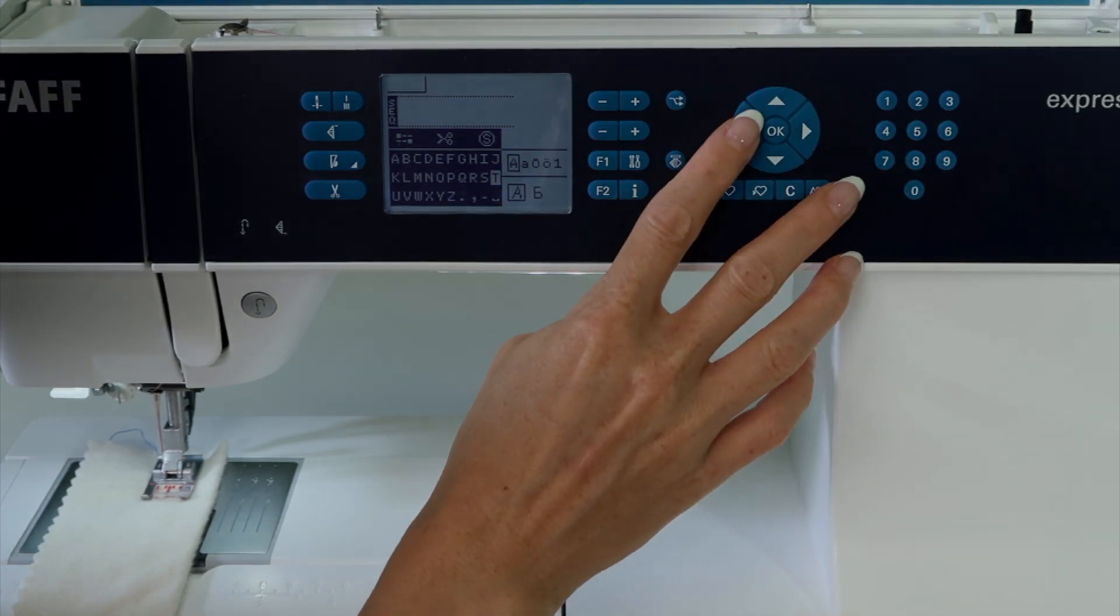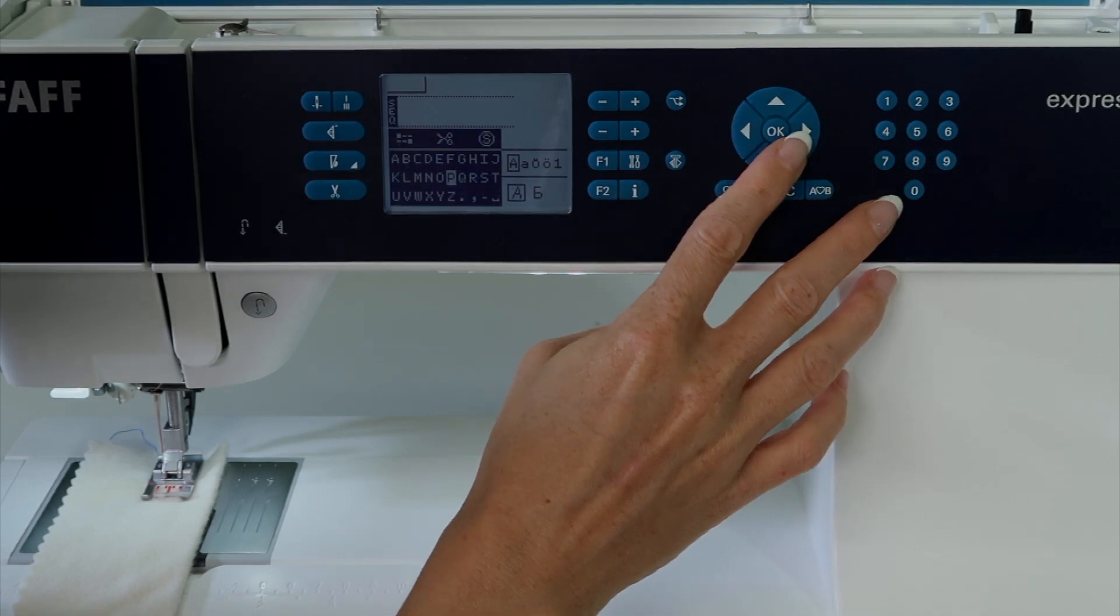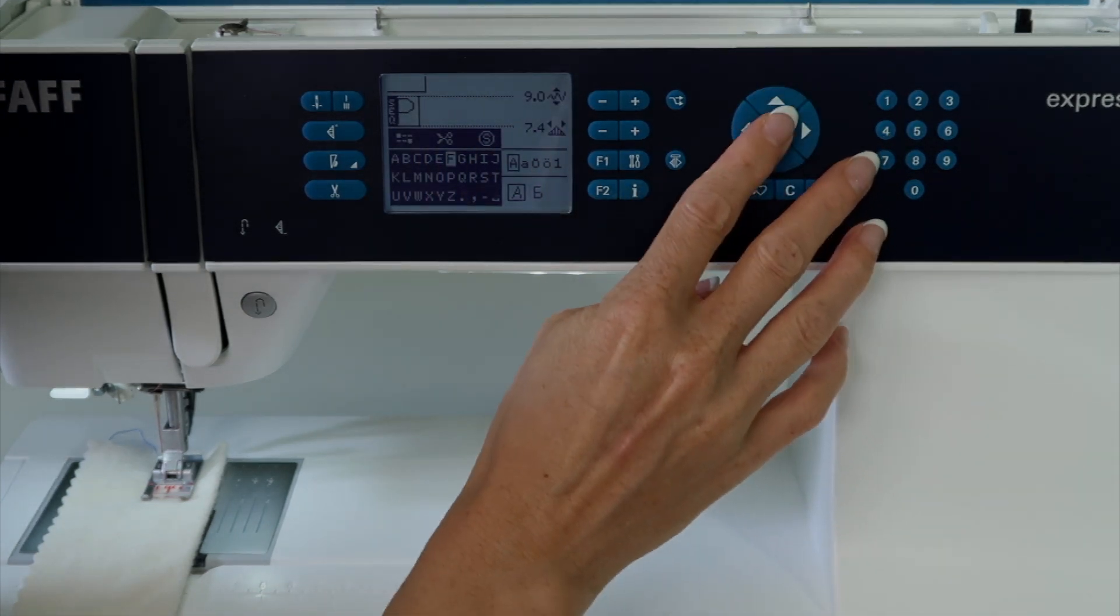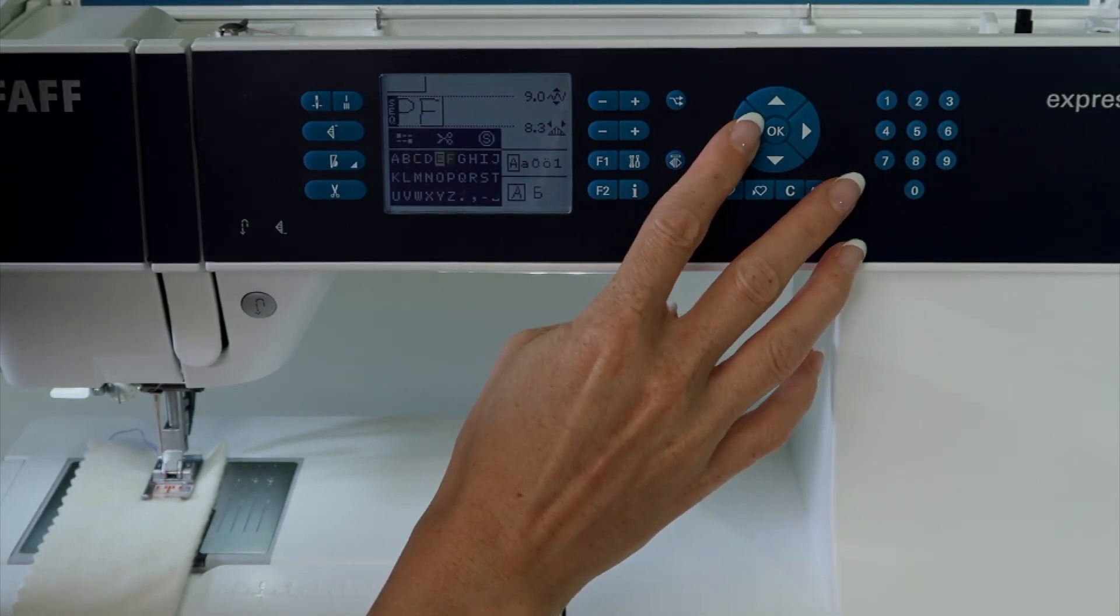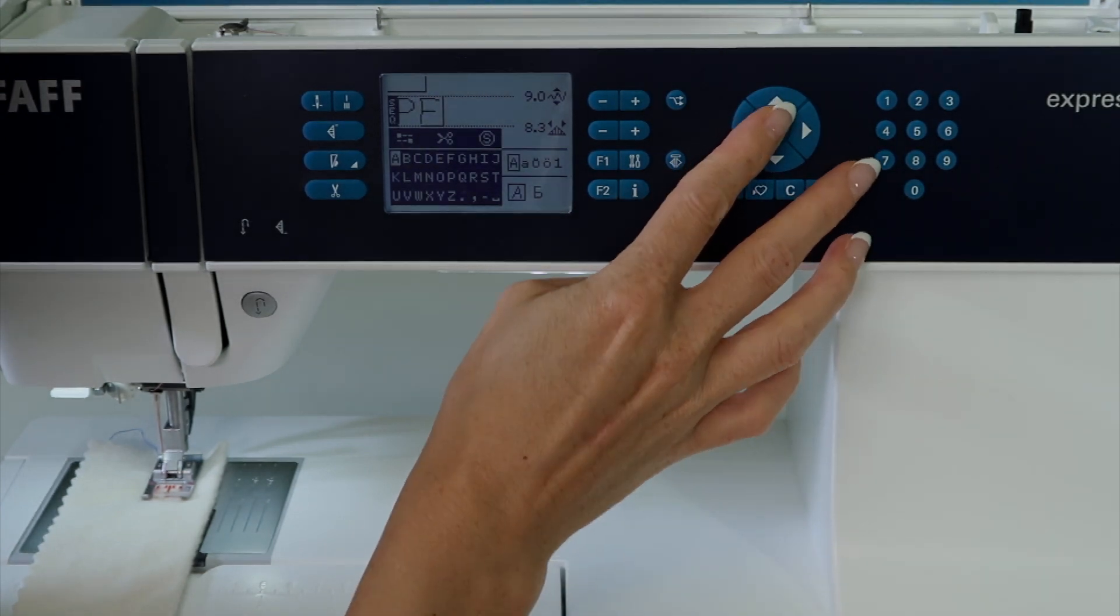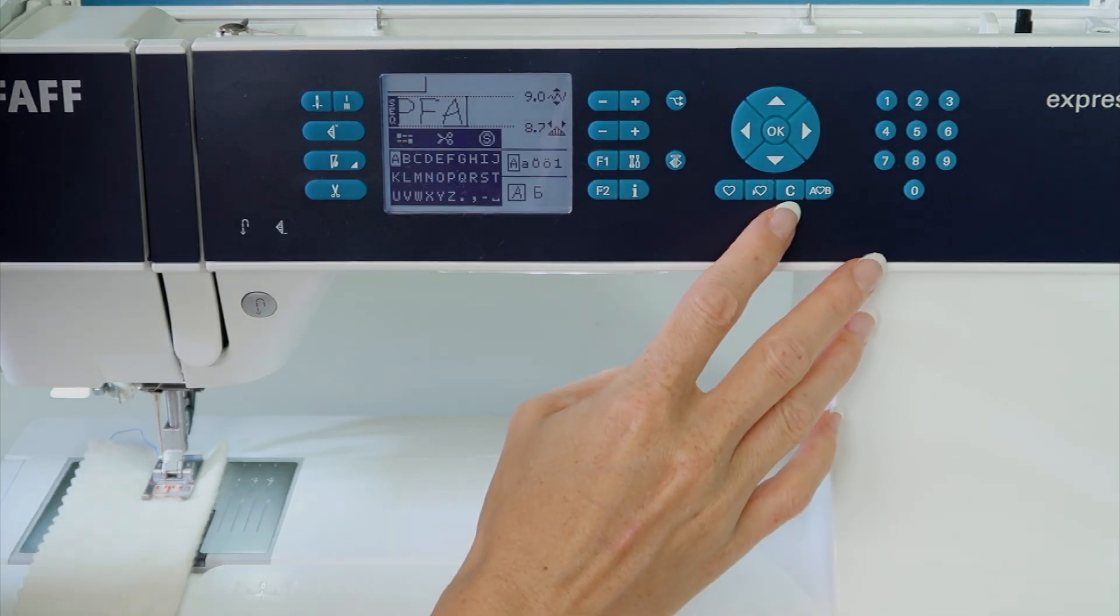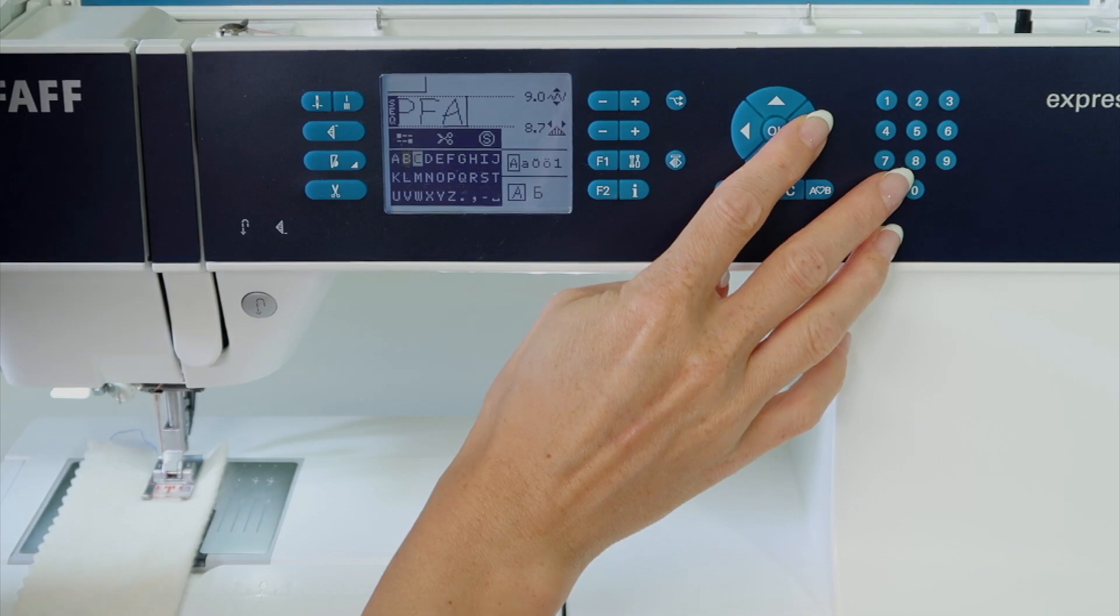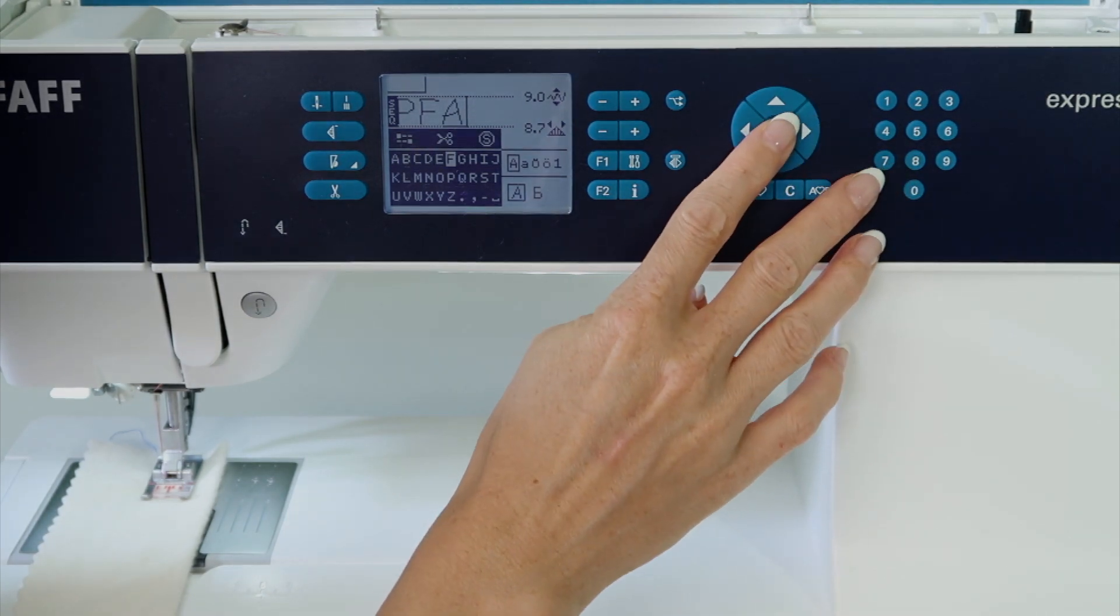So if we wanted to spell out the word PFAFF, we can start by just selecting our letter, touch OK, and you'll see it come up here at the top of the screen. If you put in a letter that you don't want, just push clear, and that will back up and clear out the last item that you put in. So put the A back in, and F, F.